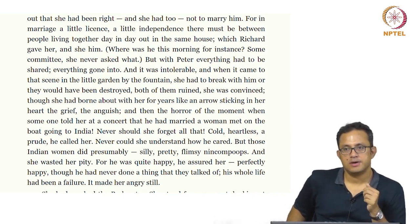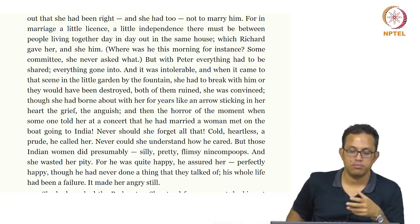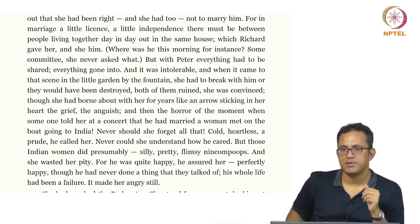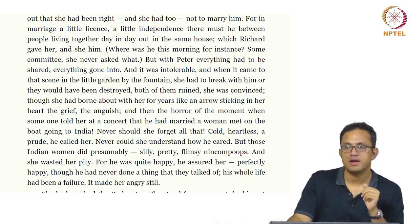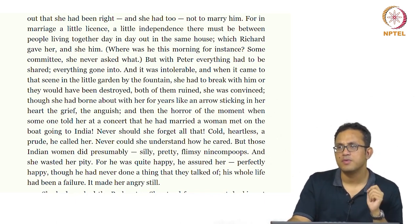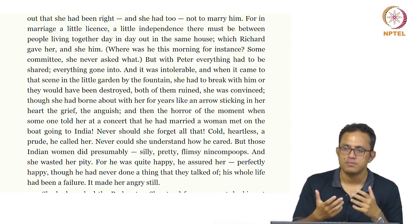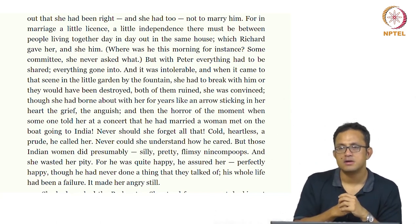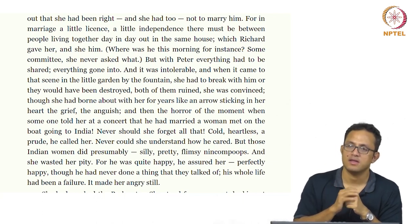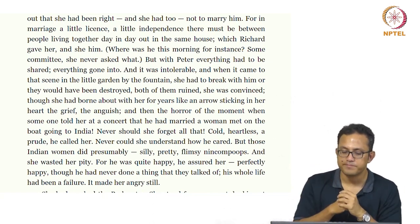We have the reference to Peter Walsh, a former lover of Clarissa Dalloway, who has come back from the colonies — from India, a British colony at that time. He had married an Anglo-Indian woman there, which is looked down upon by Clarissa Dalloway. This disregard is the typical white metropolitan disgust towards people of mixed races in the colonies — the racial miscegenation making Anglo-Indians something to be looked down upon.